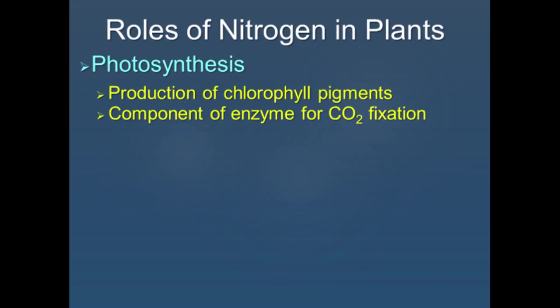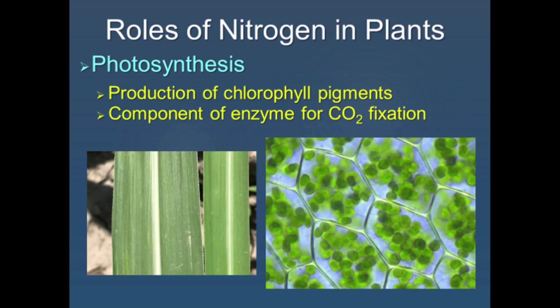Nitrogen is one of the most limiting nutrients in crop production, particularly in sugarcane, because it is contained in the largest amount — on average, the dry matter of a plant contains about 5% nitrogen. Nitrogen plays an important role in photosynthesis, a biochemical process in the plant wherein carbon dioxide is converted to glucose. Nitrogen is specifically needed in the production of chlorophyll pigments, which give the green color in plant leaves. Chlorophyll pigments capture light energy, and through the light reaction in photosynthesis, this light energy is converted into chemical energy — a usable form of energy by the plant.